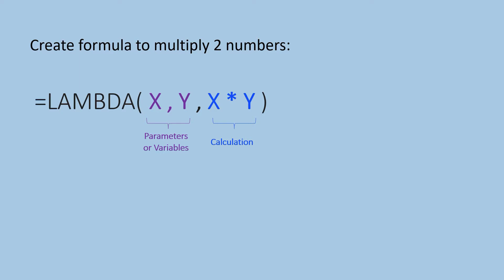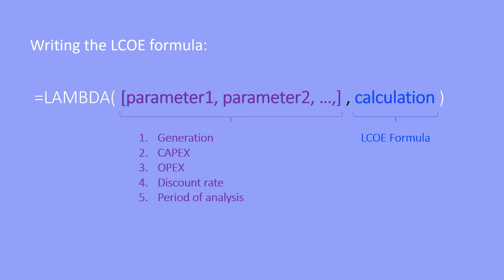Now that you know how the Lambda function works, let's start drafting our LCOE function. To create an LCOE formula using Lambda, we will first need to add our variables or inputs needed to perform the LCOE calculation as parameters. In our case, our parameters will be the total generation, the total CAPEX, the total OPEX, the discount rate per period, and the total number of periods of the analysis.